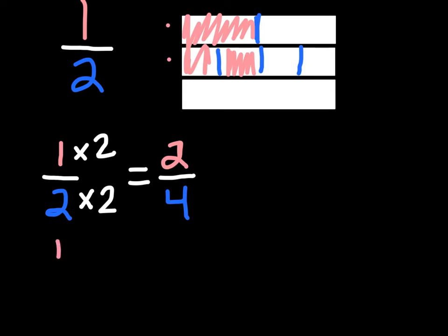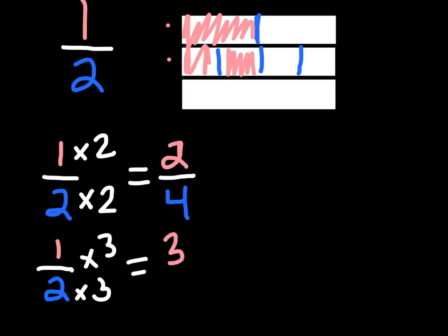Let's try one half again and multiply by another common factor — let's do three this time. Whatever I do to the numerator I have to do to the denominator: one times three is three, and two times three is six. On my fraction bar I would cut it into six pieces and shade in three of them. You can see that three sixths looks different from one half, but it is still equivalent.